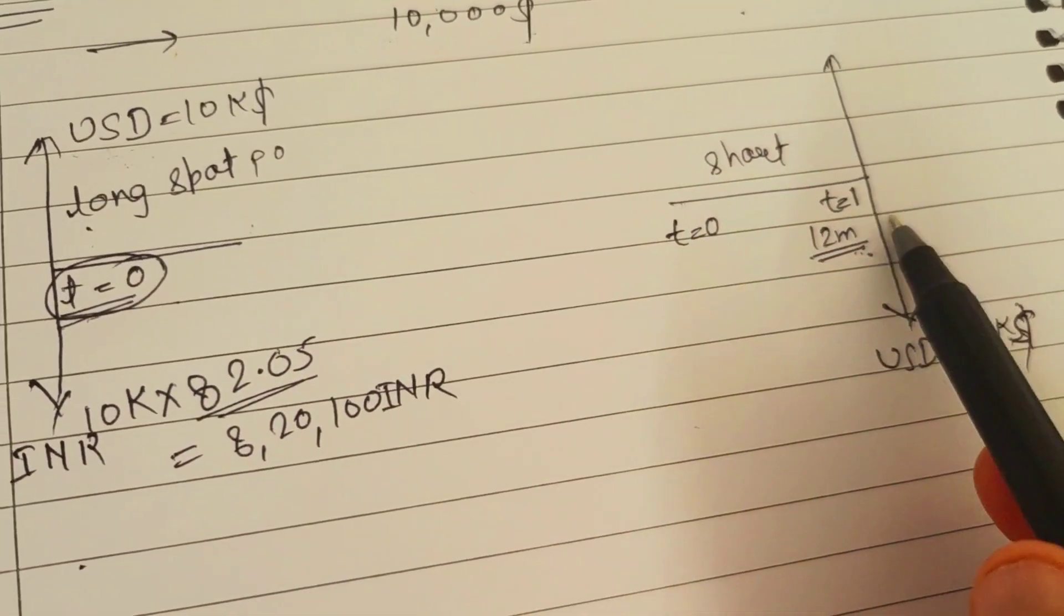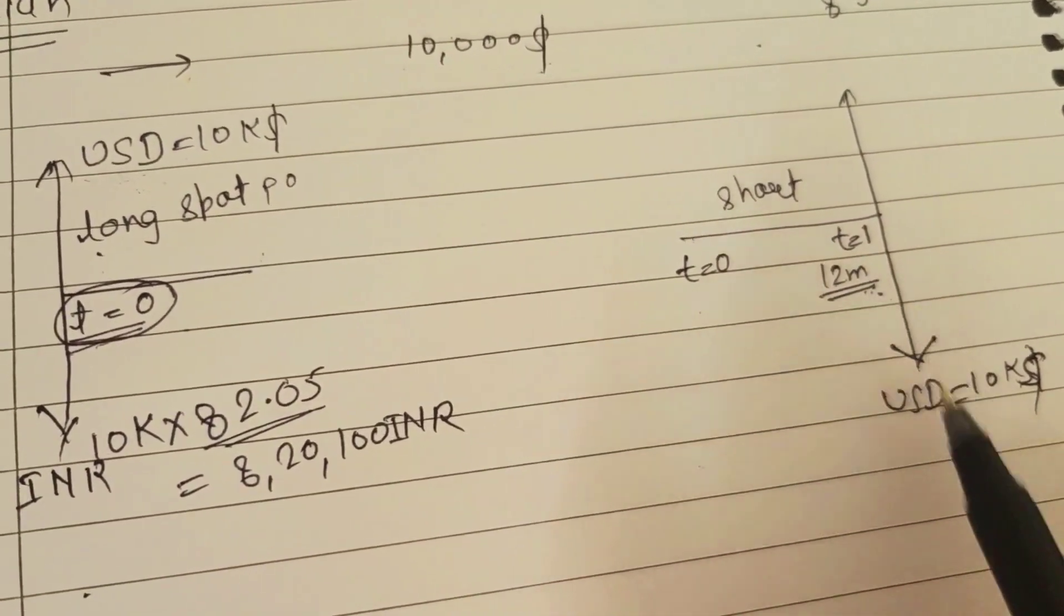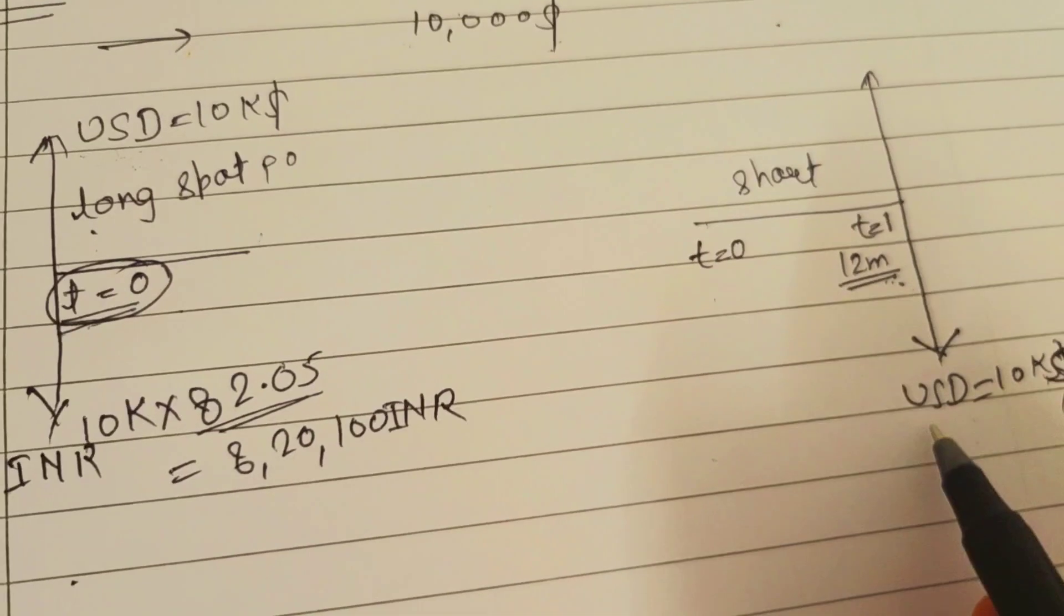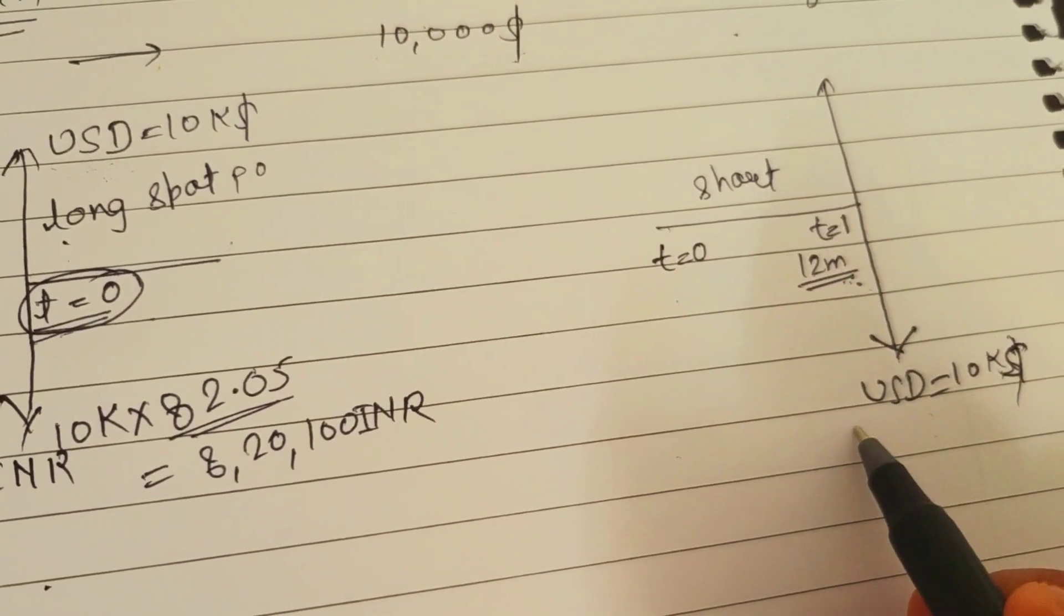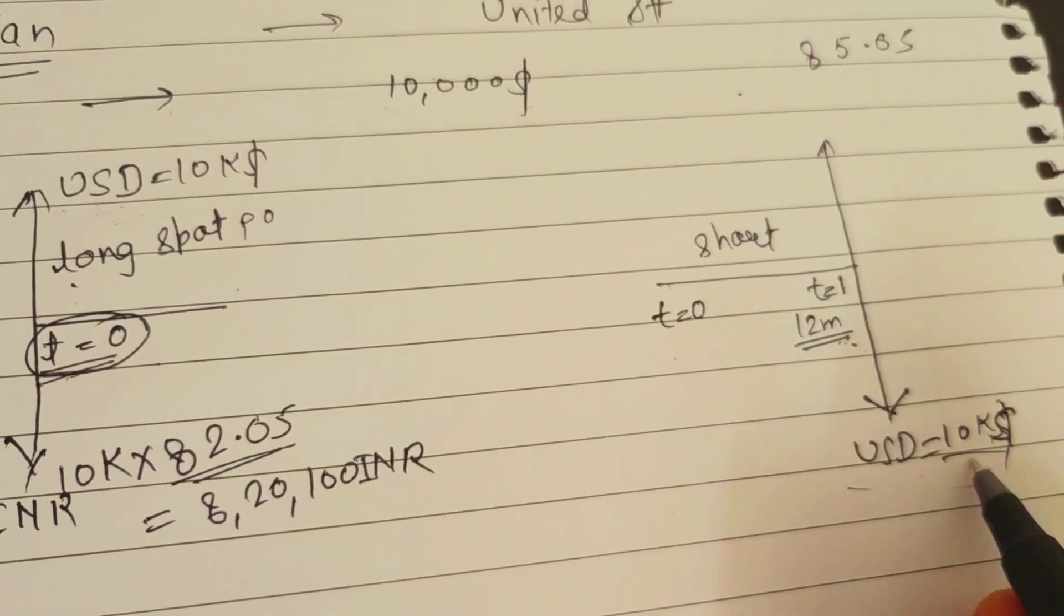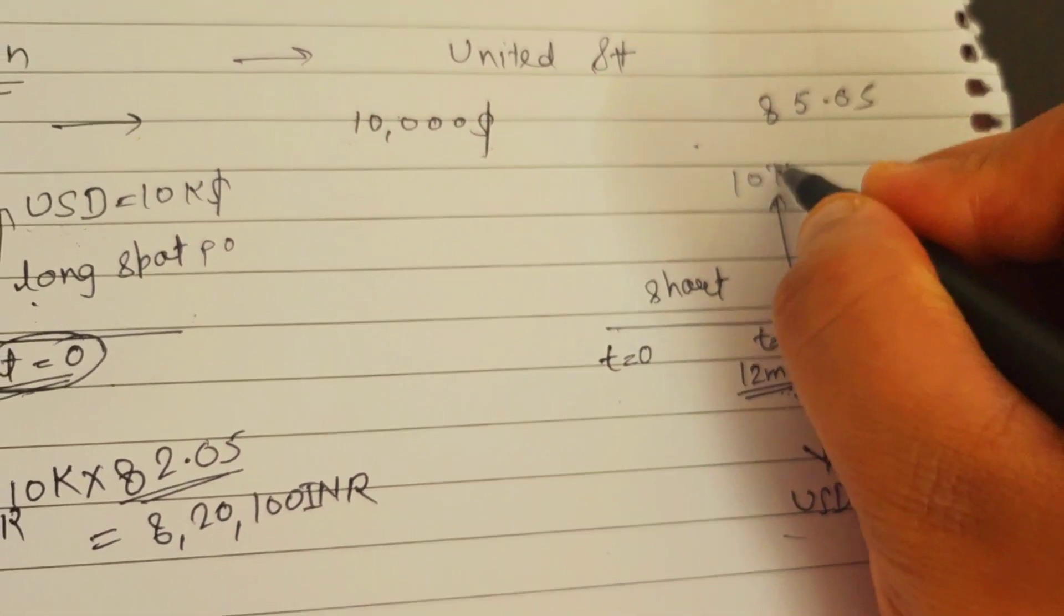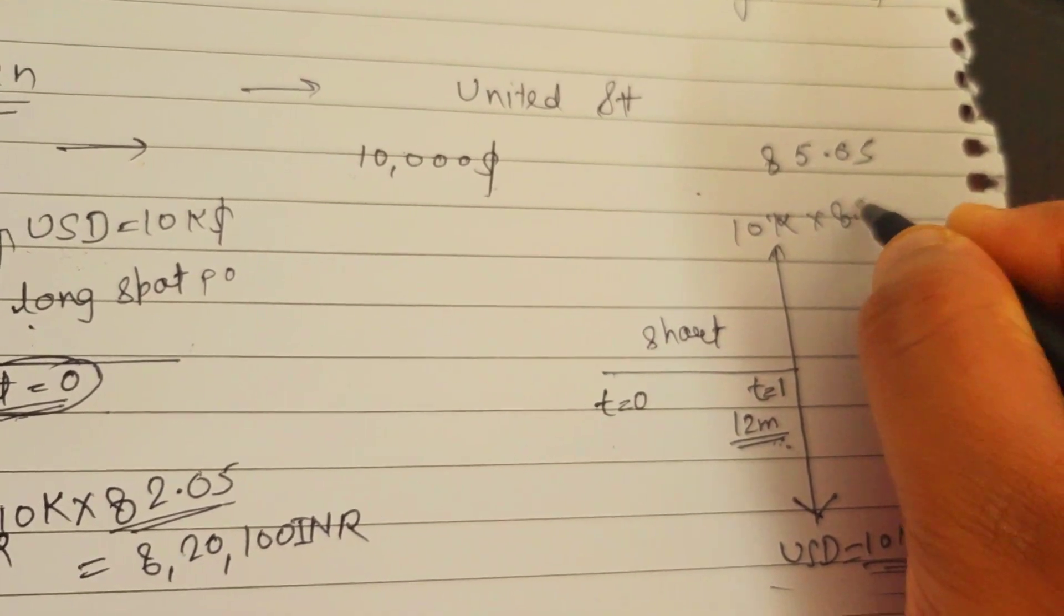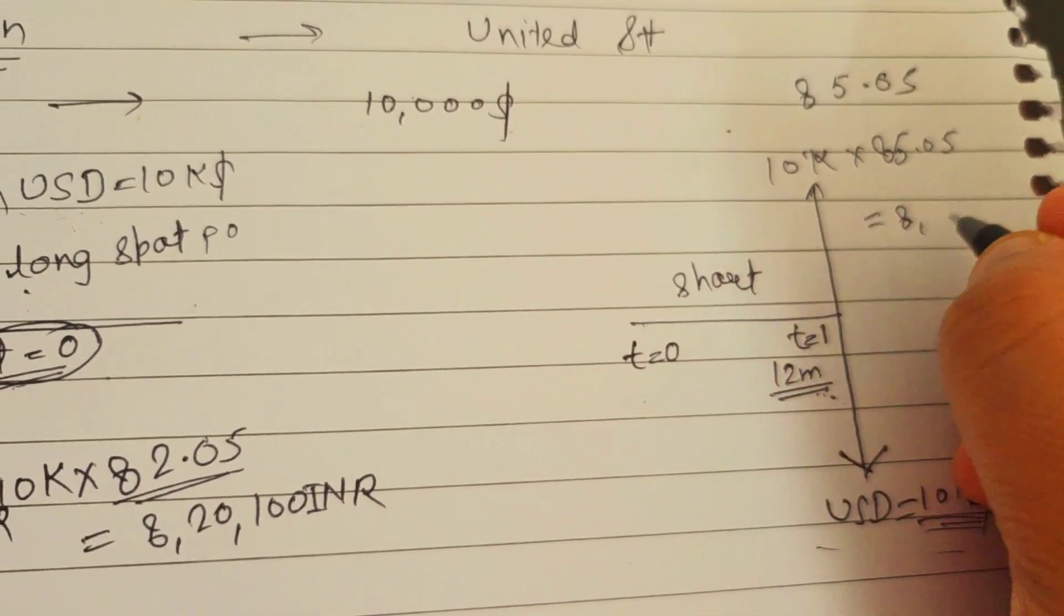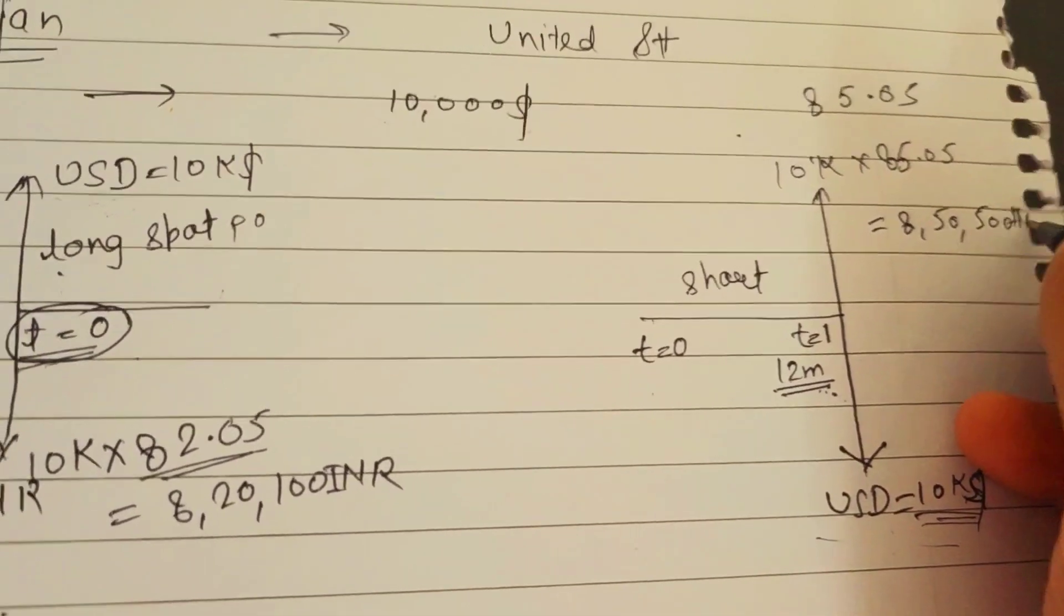Let's suppose after 12 months this future rate has come to 85.05. After 12 months, because he's already gotten into a contract that he will sell on this future date, he is going to get for the same $10,000: 10k multiplied by 85.05, which is approximately 8,50,500 INR.